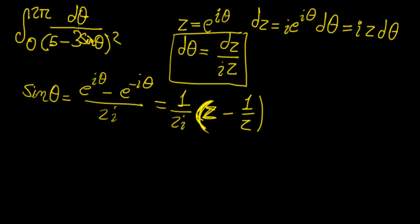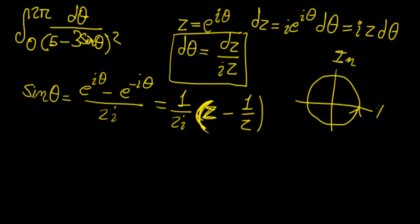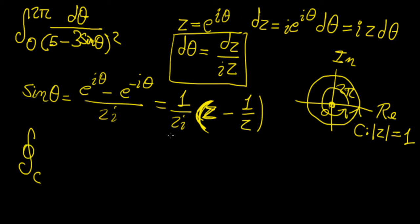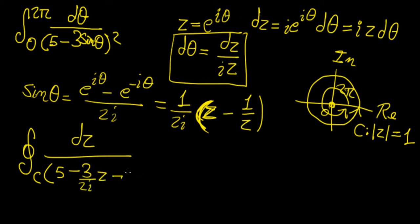Now we replace all of those things back into the equation. We consider a circle of radius 1 on the complex plane — a unit circle centered at the origin — because the limits of integration go from 0 to 2π, making this a closed curve. Replacing the variables by z, we write dz over iz in the numerator and in the denominator: 5 minus 3 over 2i times (z minus 3 over 2i over z), all squared.